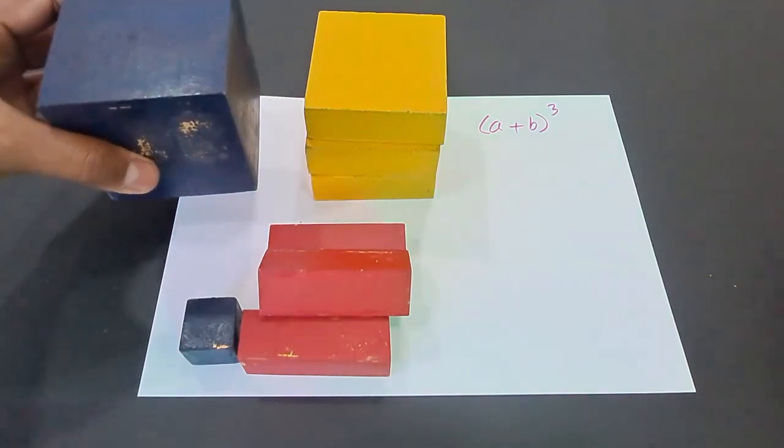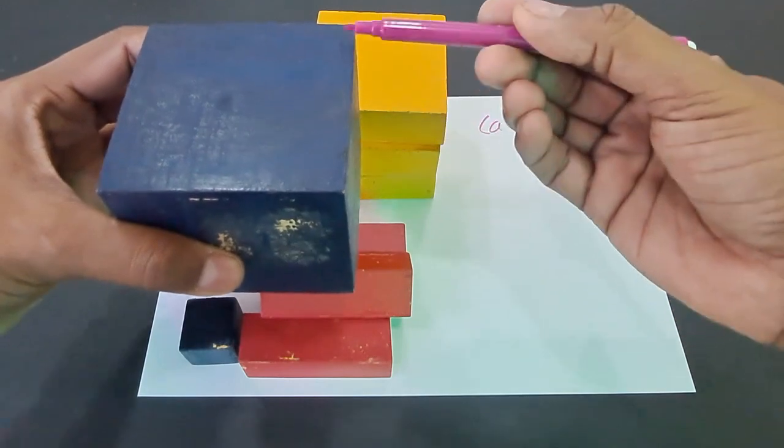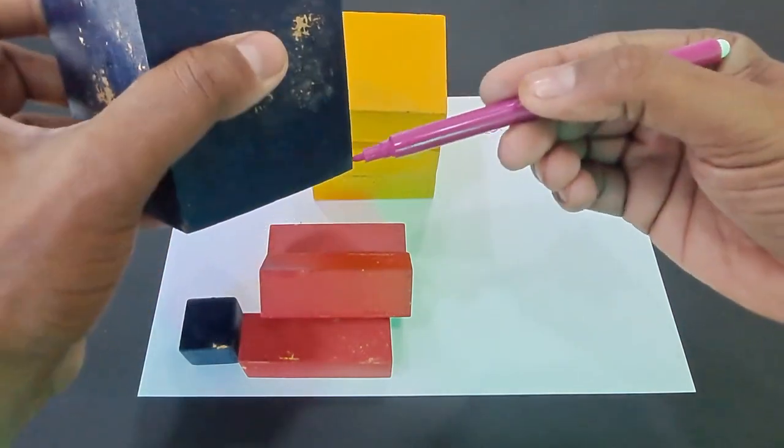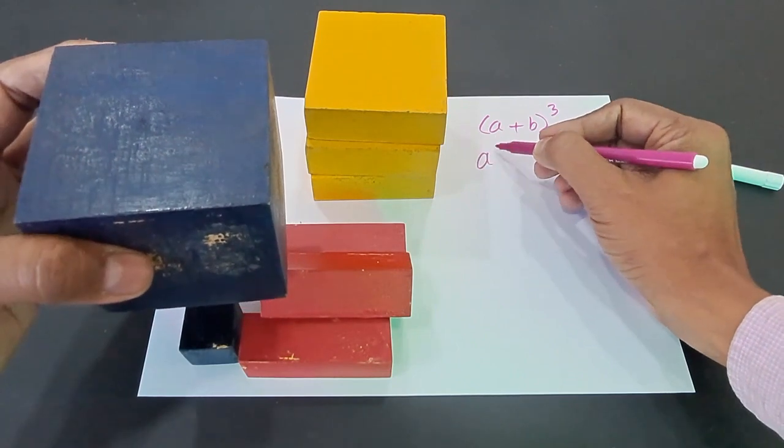You can see the big one here. This is a cube which has side a everywhere, it is a, and therefore the volume of this cube is a³.